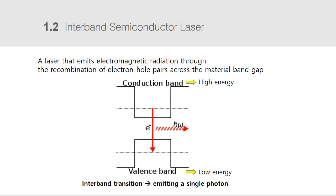Like the video shown, photons having the same wavelength and energy are amplified, and this makes the laser work. Typically, inter-band semiconductor lasers are used, which emit electromagnetic radiation through the recombination of electron-hole pairs across the material bandgap. The bandgap is not changed unless the material is changed.